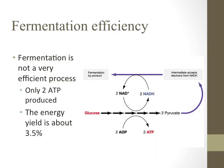In anaerobic respiration, the only energy that is produced comes through the process of glycolysis. There is a grand total of two ATP produced during fermentation, as shown on the graphic on this slide, compared to the 38 ATP obtained through aerobic respiration. As a result, fermentation is only about 3.5% efficient.